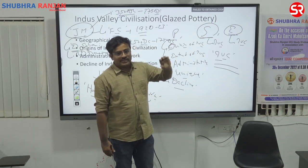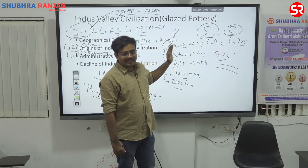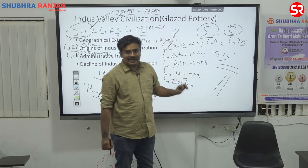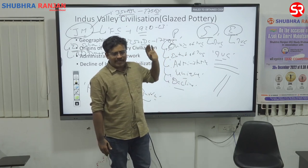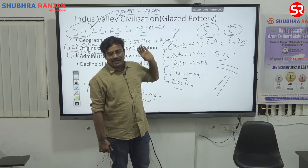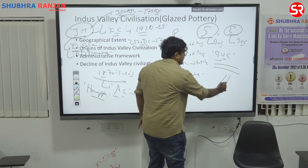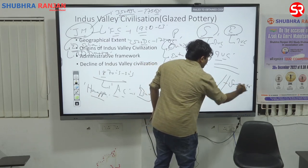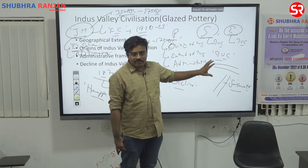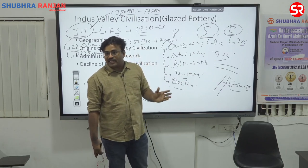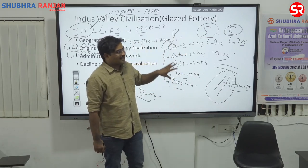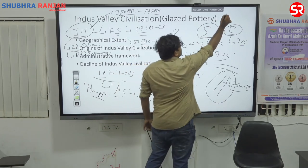Indian archaeologists and historians did not get access to these sites, so they started excavating sites present in India — primarily on the river banks of the Ghaggar and Hakra River. They were able to find numerous sites of the Indus Valley Civilization here. This Ghaggar-Hakra River is considered to be the Saraswati River of Indian mythology — the river which disappeared. Today, this civilization is not just known as the Indus civilization; it is known as the Sindu-Saraswati civilization.